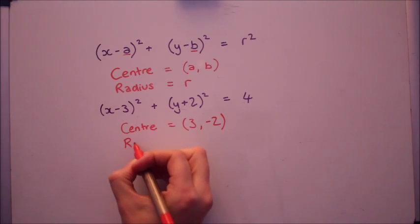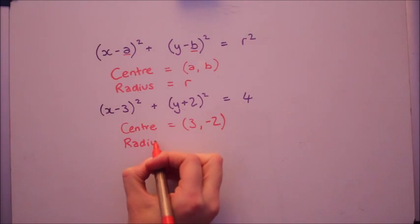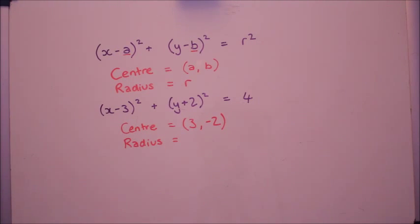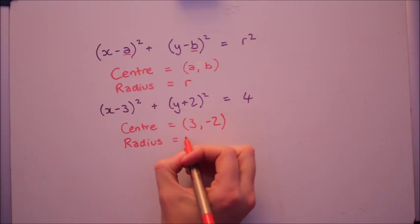The radius, again beware, the radius is not 4. Actually the radius squared is 4. So the radius is the square root of 4 which is 2.